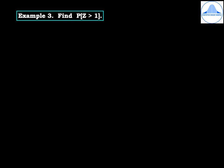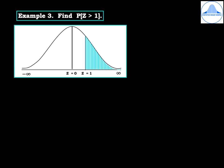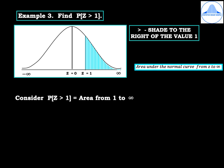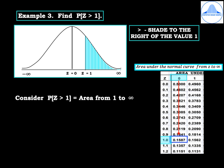Example 3: find probability of z greater than 1. Draw the standard normal curve with center line z equal to 0 and extremities minus infinity and infinity. Since 1 is positive, mark it on the right tail of the curve; greater than 1 means shade to the right of 1, so shade from 1 to infinity in green. The area from 1 to infinity corresponds to the table value. In the area under the normal curve table from z to infinity, search for 1.0 under column 0 to find the probability 0.1587. Therefore probability of z greater than 1 is 0.1587.